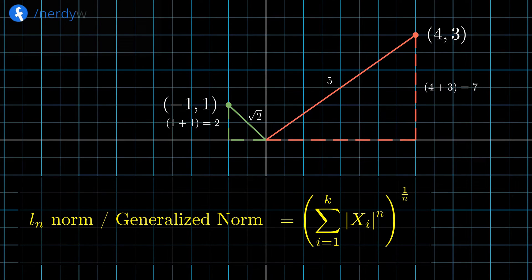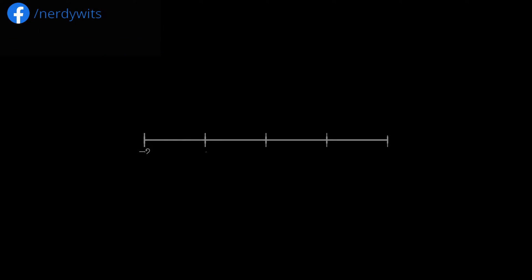Let's explore the behavior of the norms as we increase n. First, I am plotting every vector that has an L1 norm equal to 1. Every point on the circumference of the square is a vector with L1 norm equal to 1.